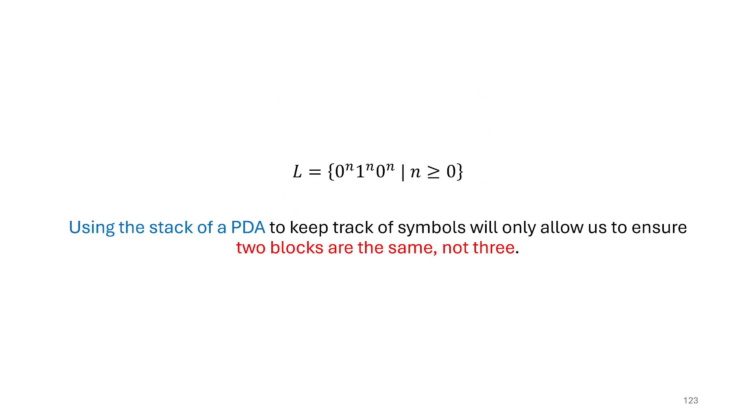So let's just think for a moment how this might work. Well, let's say we tried to build a PDA for it. We could start putting some symbols on the stack for the zeros, and then match them up with, say, the second block, the ones. But then we would have nothing on the stack to make sure that the last block was still the same size. And also vice versa, we could maybe put it on with the zeros, skip over the ones, and then do it for the last block. But then we would not have anything to know what the middle block is, and so on. So at most, we can make sure two of these blocks are the same, but not three.